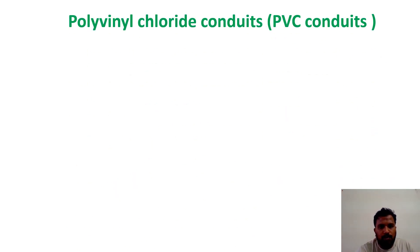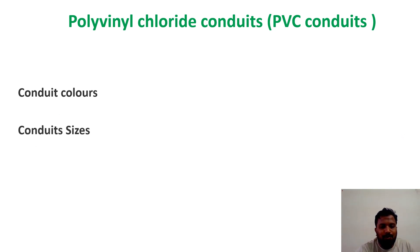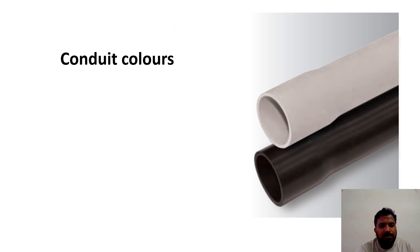Our topic is PVC conduits. What is a PVC conduit? A PVC conduit is nothing but polyvinyl chloride conduit. In reviews, they will ask you this question: What is PVC? You have to give the full form. In this video, we will be seeing conduit colors, conduit sizes, and conduit accessories.